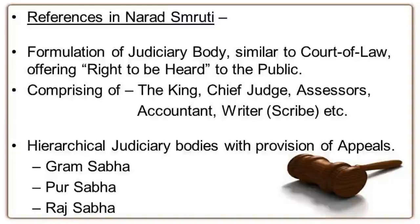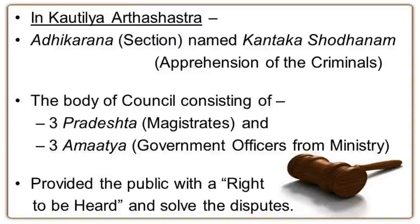The judiciary body was similar to a court of law which comprised of the king, chief judge, assessor, accountant, writer or scribe, etc. There were also hierarchical judiciary bodies like Gram Sabha, Pura Sabha and Raj Sabha, which provided the right to be heard as well as provisions for appeals. In Kautilya Arthashastra, the Adhikaran named Kantakshodhanam explained about a body of council consisting of three Pradeshta — that is, magistrates — and three Amatya — that is, government officers from the ministry. This provision provided the public with a right to be heard and to solve disputes accordingly.